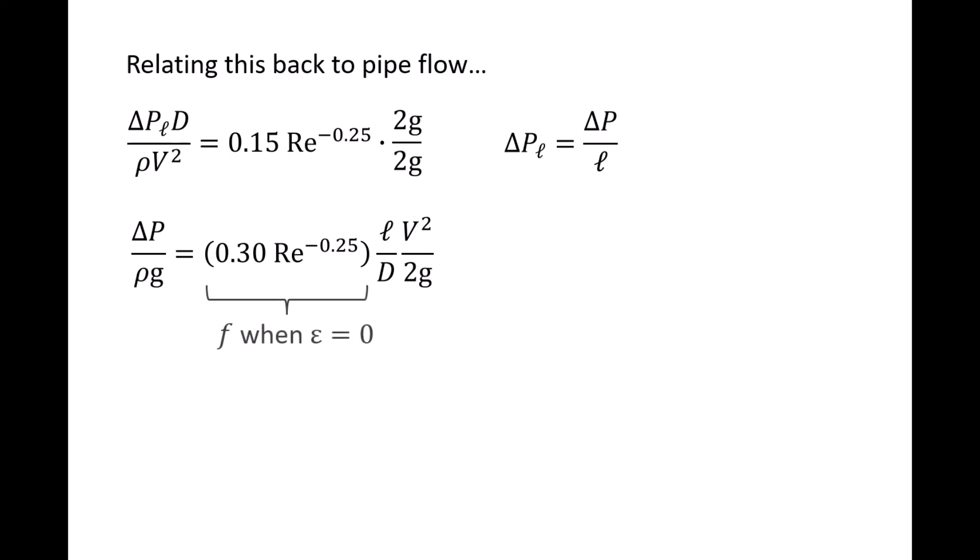The term 0.3 times Reynolds number to the negative 0.25 is a decent approximation for the friction factor f for smooth-walled pipes experiencing steady, incompressible, isothermal, fully developed turbulent flow in the Reynolds number range of 4010 to 98,500. You can verify this by examining a Moody chart.